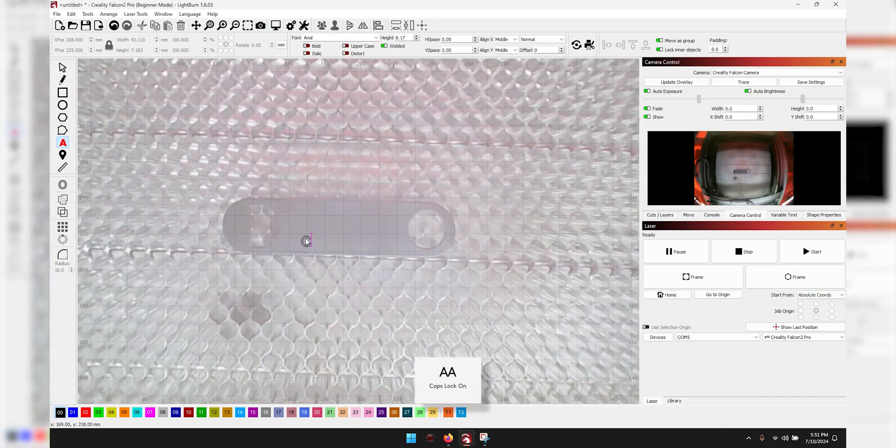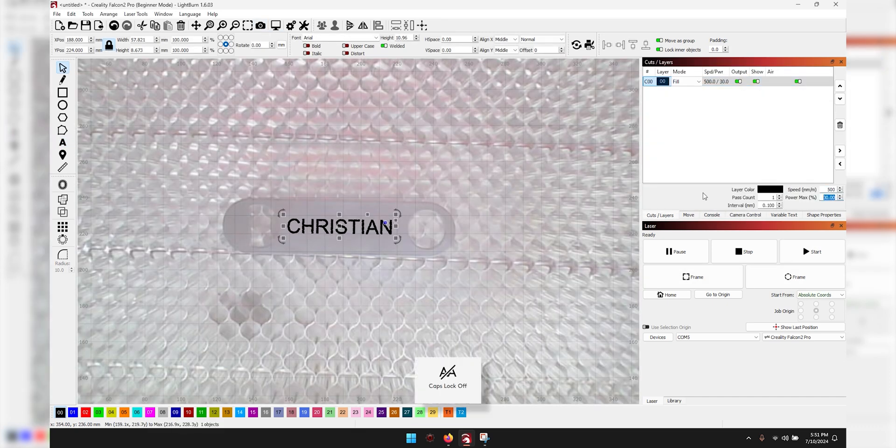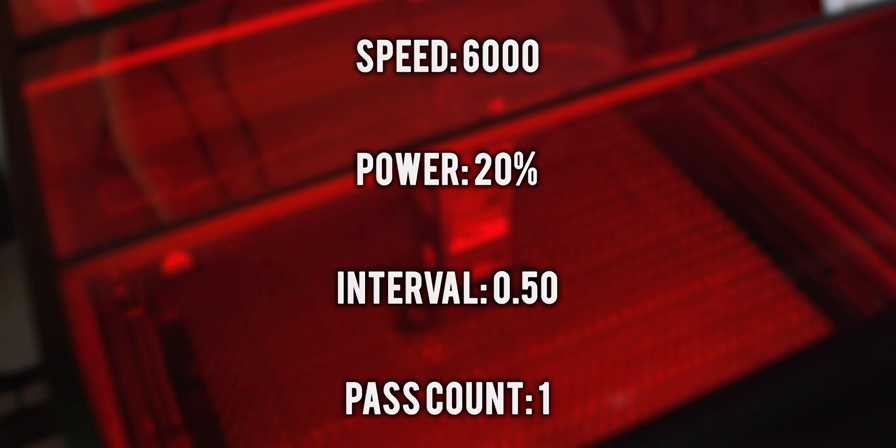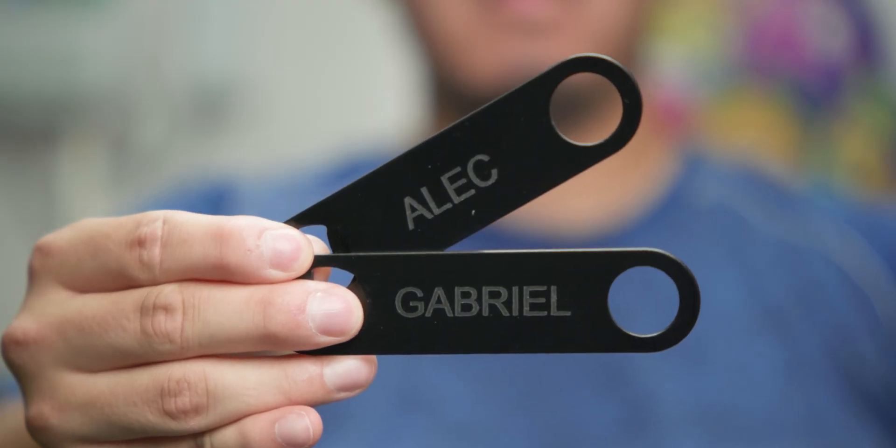The first test I ran was with some metal bottle openers. I wanted to see how well it did with engraving on metal and how accurate the camera was. The settings that worked best were speed at 6000, 20 power, 0.50 interval, and one pass count. That looked the best and the camera was pretty accurate when calibrated correctly.